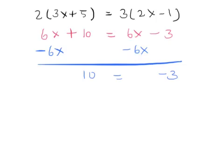So what have we seen? We are getting 10 equals negative 3, which is absurd. So we say that is false. 10 cannot be equal to negative 3.